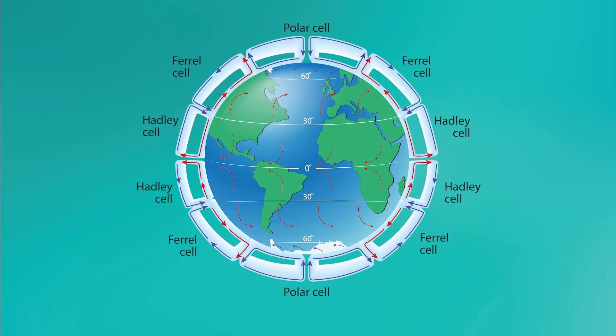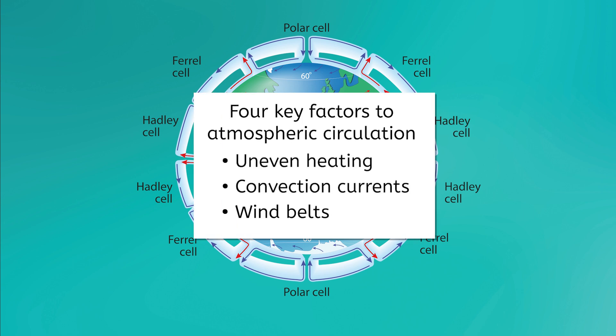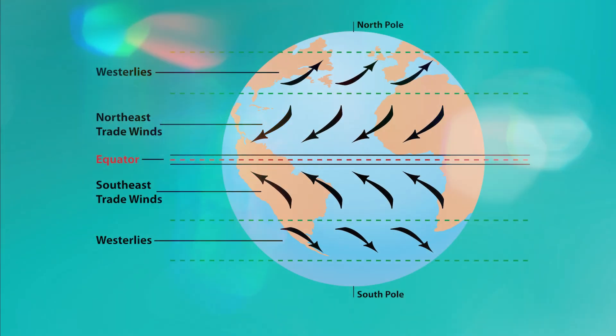Did you remember the Hadley cell, Ferrell cell, and Polar cell we learned about earlier in the unit? Convection currents form these distinct cells at different latitudes, which then create wind belts. This is the third factor in atmospheric circulation. These wind belts — the trade winds, westerlies, and polar easterlies — blow across the globe in specific directions.